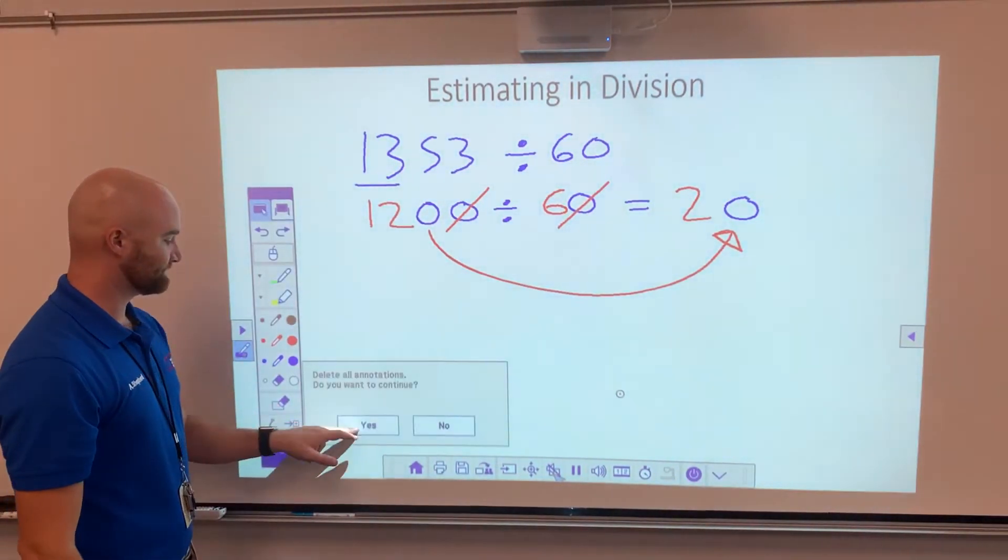Now I'm going to divide it. 24 divided by 6, that's an easy thing for us to do. That's going to give us 4. Then I have to figure out how many 0s I've got left over. One 0 got divided away, and the other one ends up down here, and my estimate is 40.